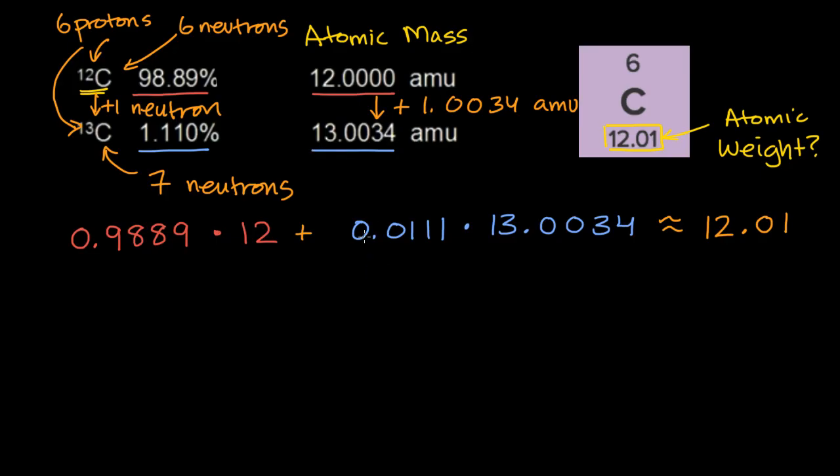But anyway, hopefully you now have appreciation for the difference between atomic mass, which is the mass, and atomic weight, which is the weighted average of the various isotopes of that element on Earth, how to calculate it, and roughly what the mass of a neutron is.